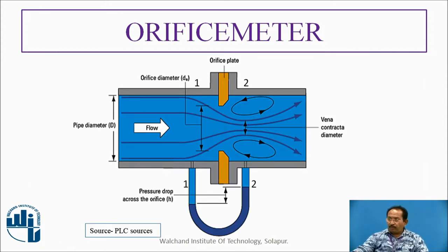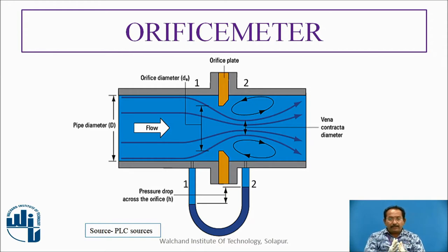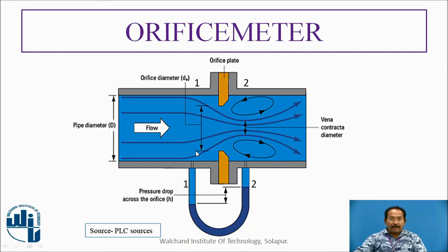See this figure. You can see here: this is a pipe, this is the pipe diameter, this is the flow, and this is the orifice plate. The Bernoulli's equation comes to mind because we are going to apply it at two sections — section one and section two. It is a thin plate and we are going to apply Bernoulli's equation at the first and second sections. This may be called the control volume.